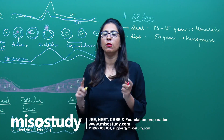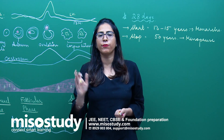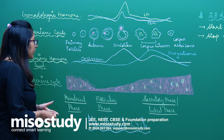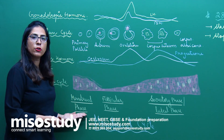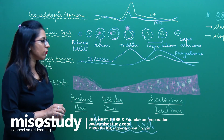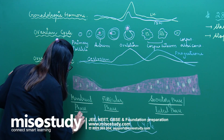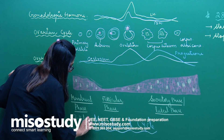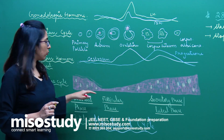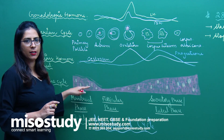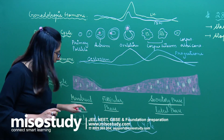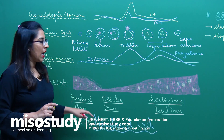The whole menstrual cycle is divided into various phases. The first phase is termed the menstrual phase, which lasts for around 3 to 4 days. During these 3 to 4 days there is a menstrual flow. The endometrium which is formed breaks down, and that leads to the menstrual flow.